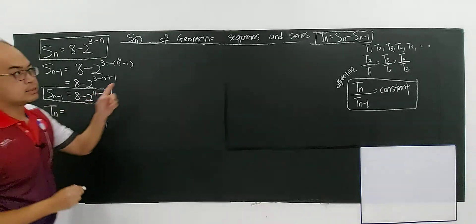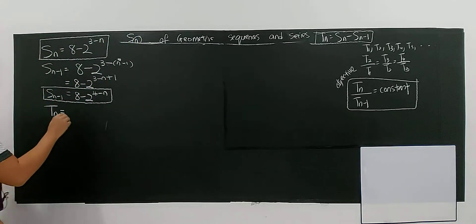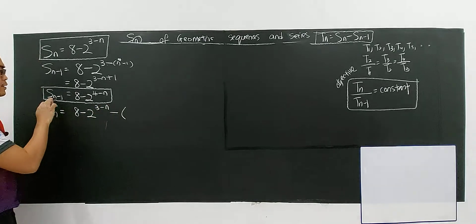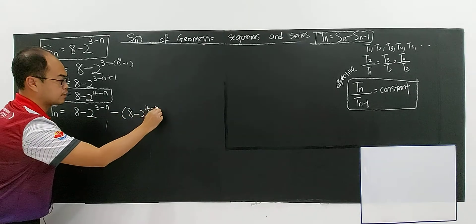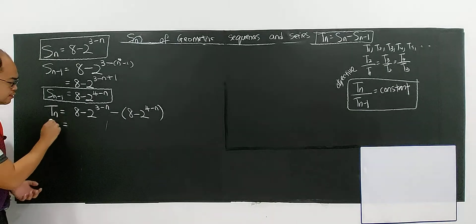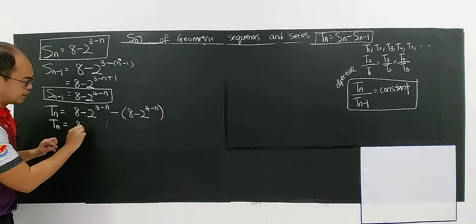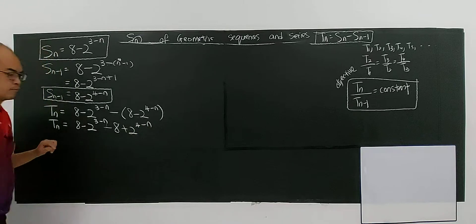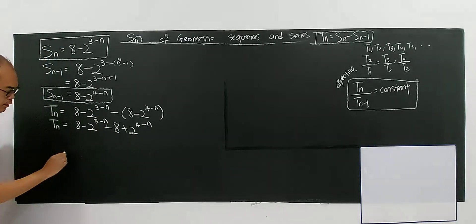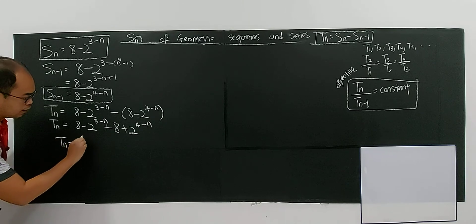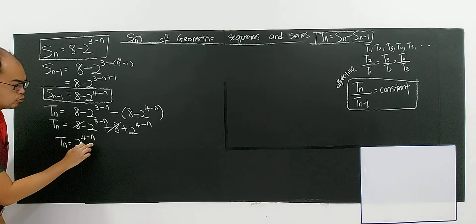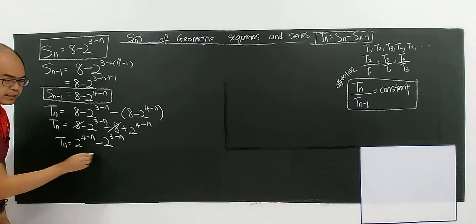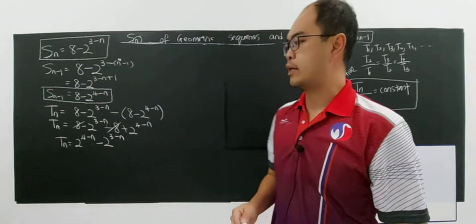Now find TN. TN equals SN minus SN-1, which is [8 minus 2^(3-N)] minus [8 minus 2^(4-N)]. Expanding: 8 minus 2^(3-N) minus 8 plus 2^(4-N). The 8s cancel out, giving TN equals 2^(4-N) minus 2^(3-N). You need to be very good in algebra to simplify this — it involves index laws.